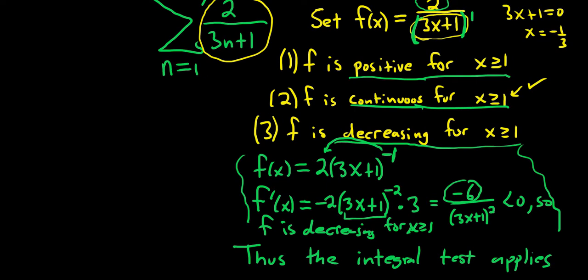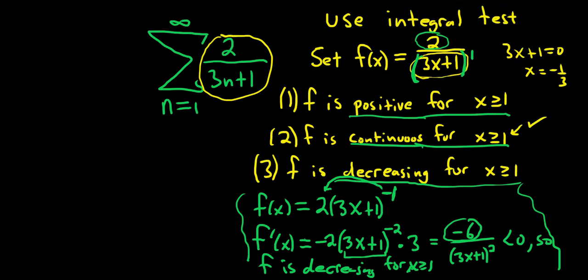So what does it even say? Well it says that our infinite sum, which is right here, and the improper integral from 1 to infinity of 2 over 3x+1 dx will either both converge or they'll both diverge.